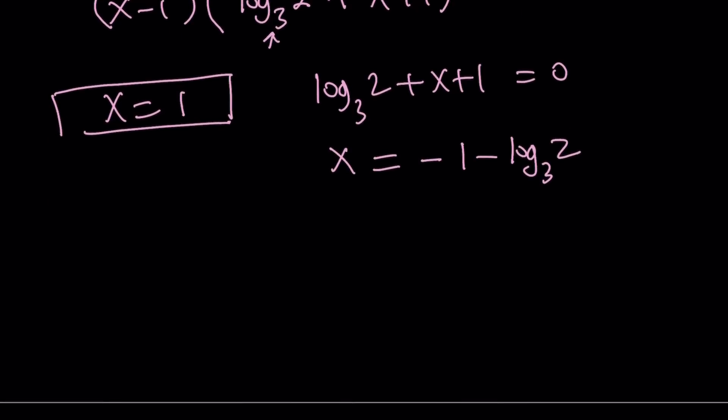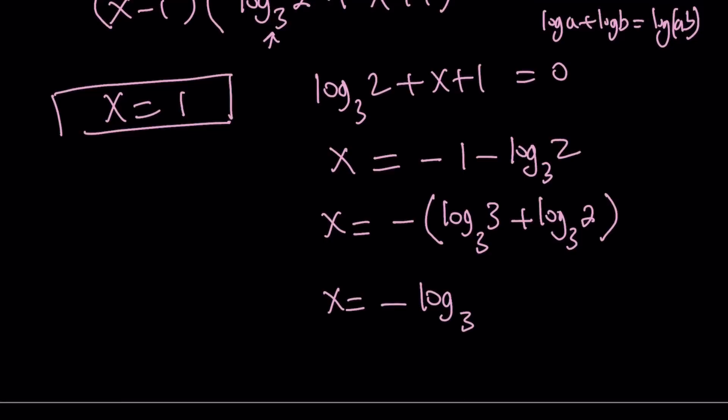I can write x in a different form. I can plot a negative 1 and write the 1 as log base 3 of 3, and that's going to be a plus sign. Then using properties of logarithms, if you have log a plus log b with the same base, that is equivalent to log ab. Of course, in order for these to be well-defined, a and b both have to be positive, and they are positive, so we're good.